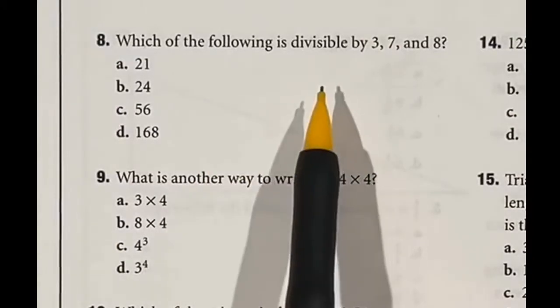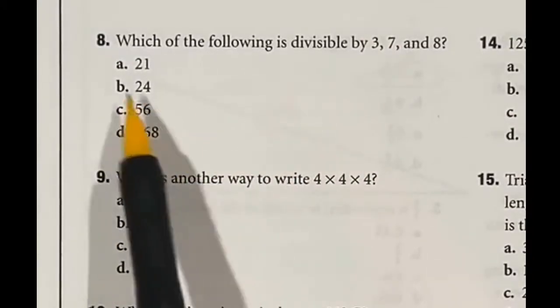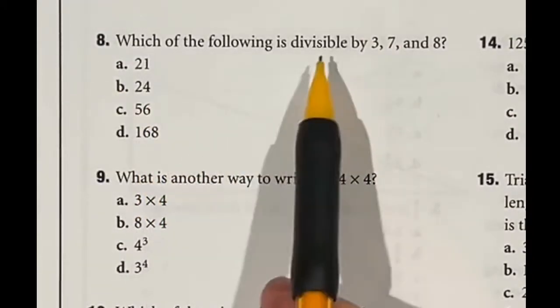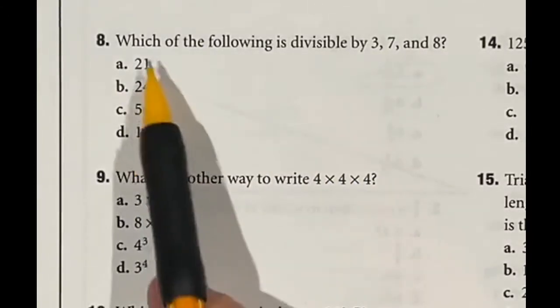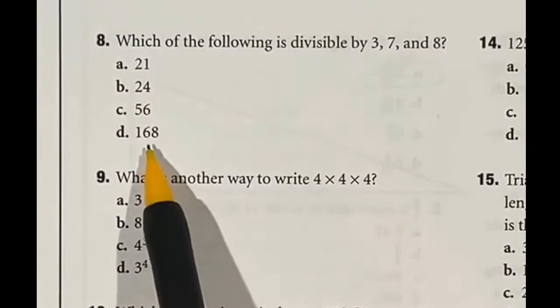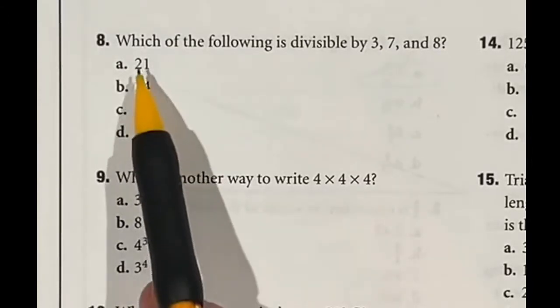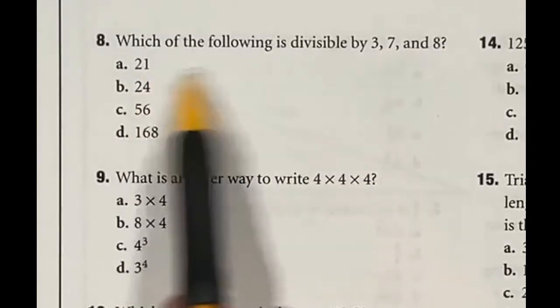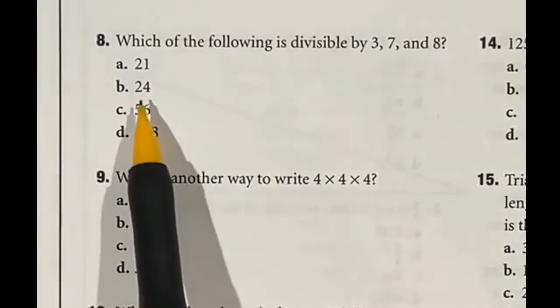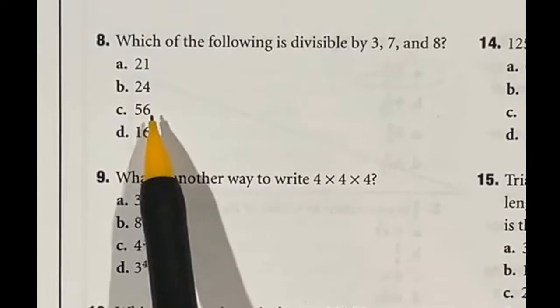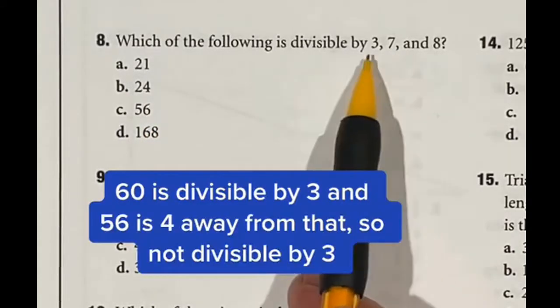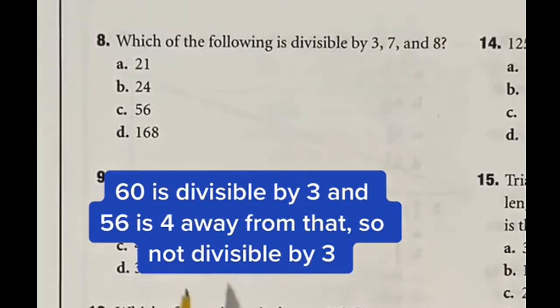Number eight is going to be best solved by process of elimination. Because if I look at these answers here and try to tell which one's divisible by three, seven, and eight: 21, 24, and 56, I know what things divide those. 168 might be out of my range. 21 I know is divisible by seven but it's definitely not divisible by eight, whereas 24 is divisible by eight but not by seven. 56 is divisible by both seven and eight but not by three, so that means that our answer has to be 168. Answer D.